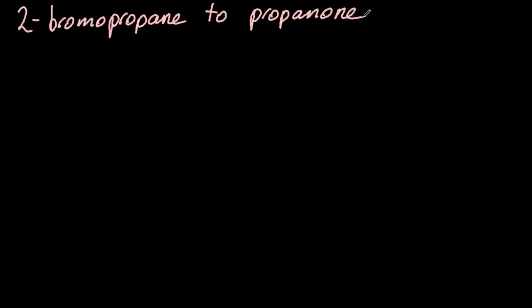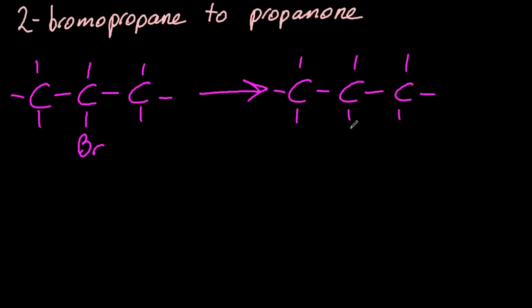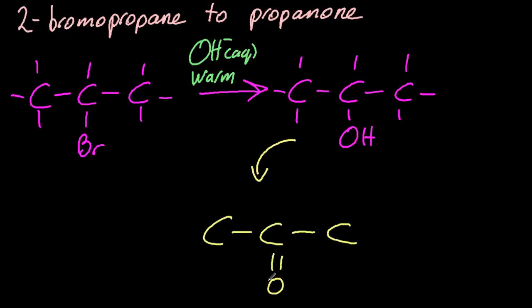And finally, 2-bromopropane to 2-propanone. Well, propanone should tip you off. You need to make a secondary alcohol somewhere. Okay, there's our secondary alcohol. Is that SN1? Is that SN2? You don't know. It's a secondary haloalkane. You can't tell. And finally, oxidation with acidified dichromate. Orange to green. Easy.